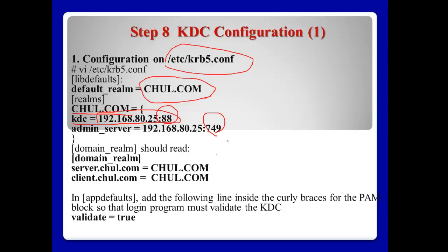The admin server also has the same IP address and port number 749. The domain realm is charl.com. server.charl.com and client.charl.com will join this realm as hosts. After that, in this part we need to add the line 'validate = true'.